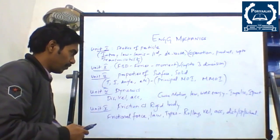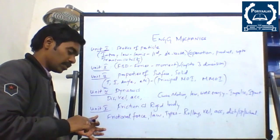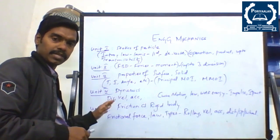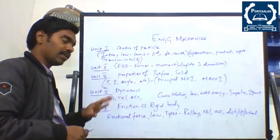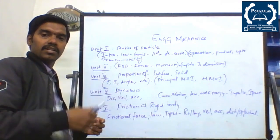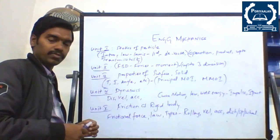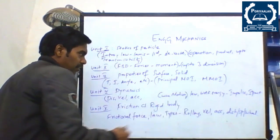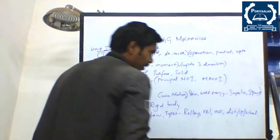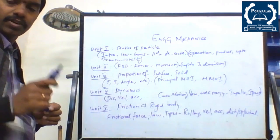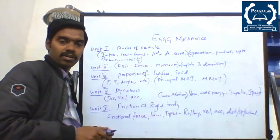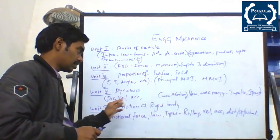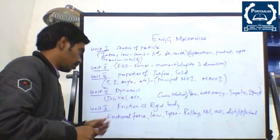Unit 4 covers dynamics. We are going to study what dynamics is, the different types of dynamics available, and the important parameters like displacement, velocity, and acceleration — how to calculate them. There are a huge number of formulas available in dynamics. Even if you are studying in Grade 11 and Grade 12, you study these dynamics topics — the same thing is going to be applied here. In Part A, two questions will be asked: one from one area and one from laws up to impact and impulse. Long answers will also be asked from Area 1 and Area 2.